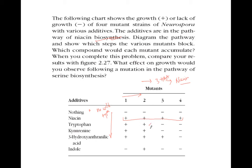Tryptophan and kynurenine both have 2 pluses. We don't know whether tryptophan or kynurenine has an exact position in this biosynthetic pathway — this may be a branched pathway because we don't have a mutant between tryptophan and kynurenine. It is difficult to determine their exact positions. The last substrate is indole, because it has only 1 plus.